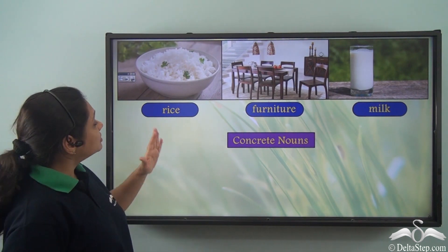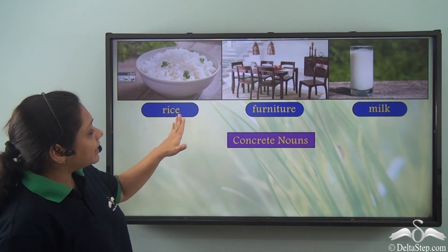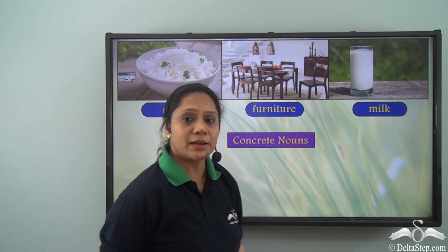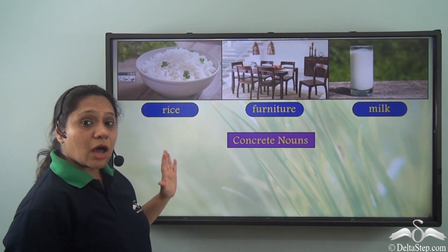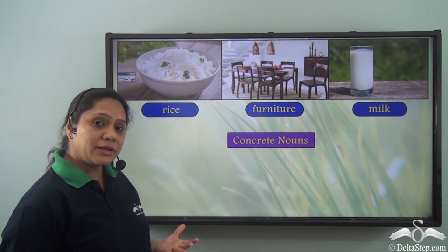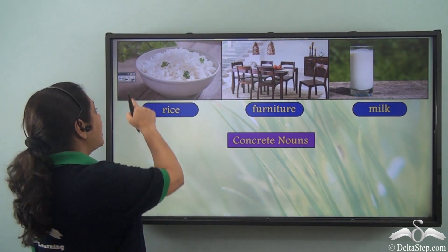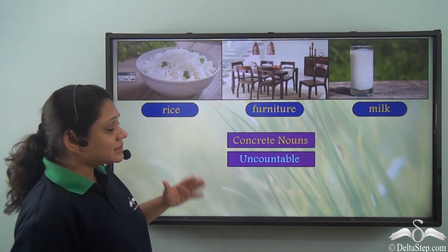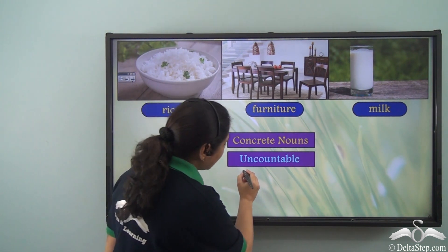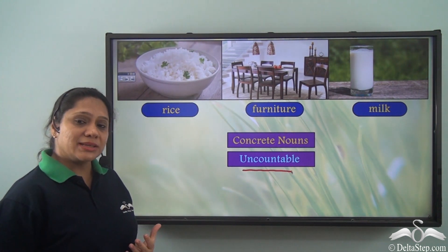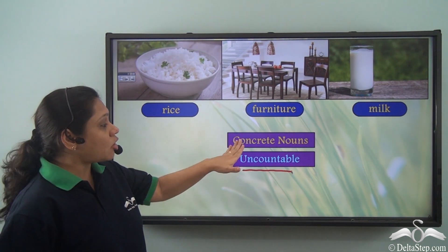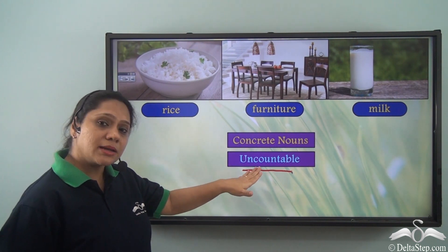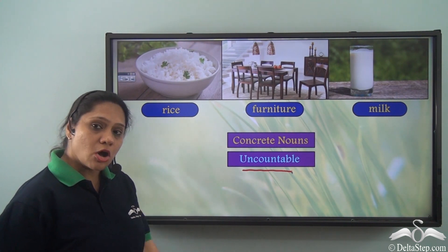But what about nouns like rice, furniture, milk? These nouns are also concrete nouns, but we know that these are uncountable. So we can say that concrete nouns can be uncountable also.